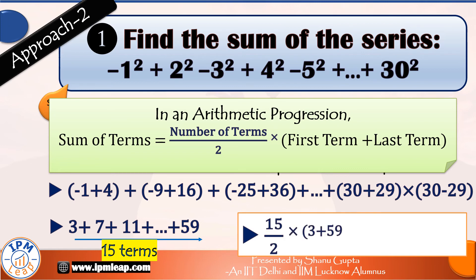That means the sum of these terms will be 15 by 2 into 3 plus 59, which is equal to 15 into 31, which in turn is equal to 465. So either way, both approaches give us the same answer as expected. Our answer is 465.